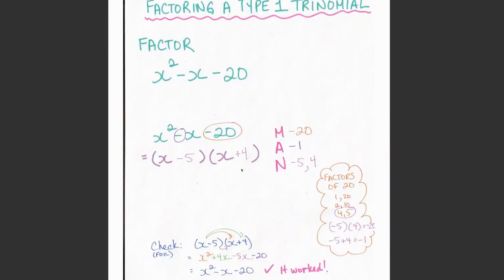I know that the numbers that I found here using this little trick, my MAN trick, helped me to be able to find the numbers that I would use in the factors so that I can rewrite this expanded form in factored form, where I have two things in brackets being multiplied together.